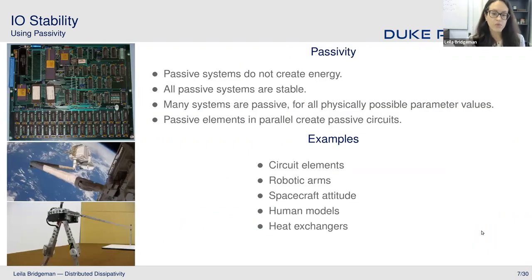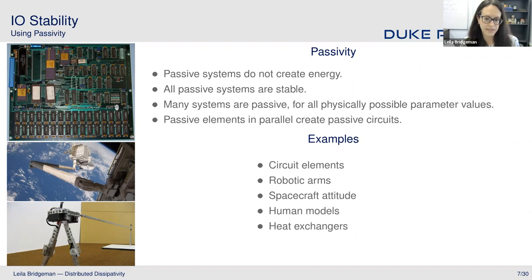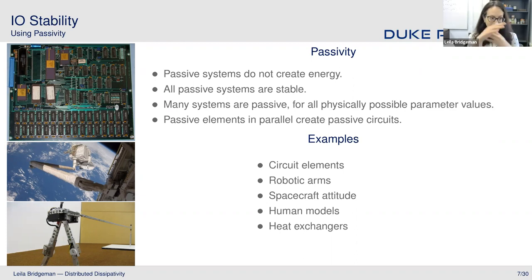One of the most popular input-output stability results is the passivity theorem. Passive systems are systems that don't create energy, and every passive system is going to be stable, so sometimes we can analyze passivity in place of analyzing stability. There are many physical systems that are naturally passive — often passive for all possible physical parameter values. Basic circuit elements, robotic arms mapping joint torques to joint velocities, spacecraft attitude control mapping co-located torques to rates, human interaction models like haptic feedback, and heat exchanger models are all passive.